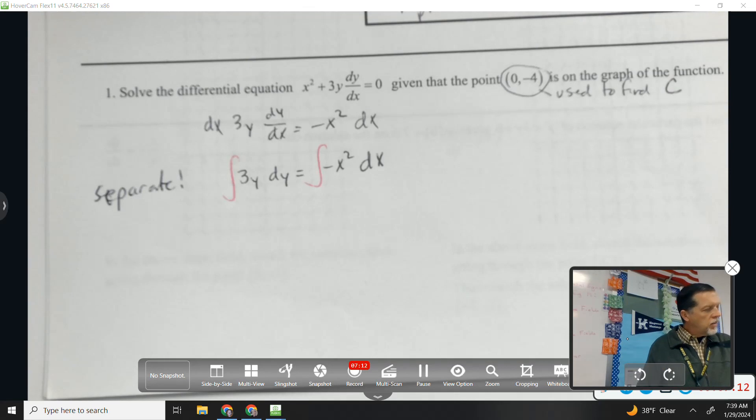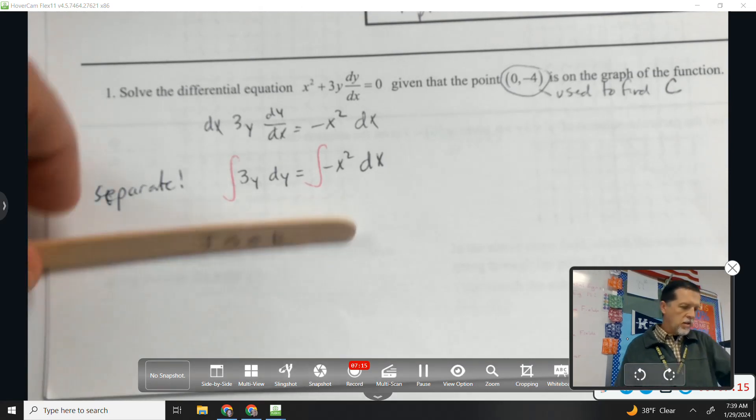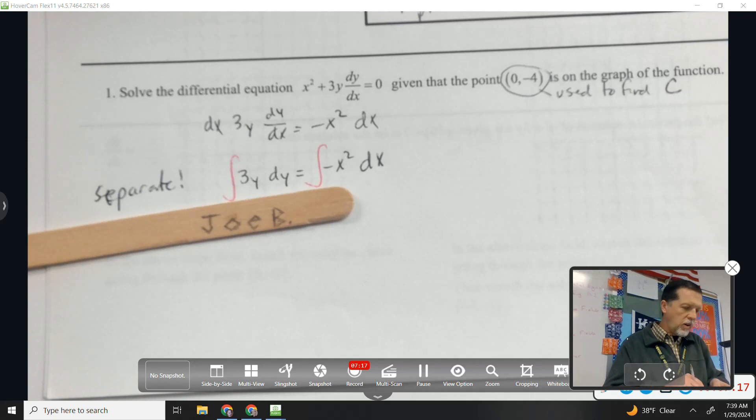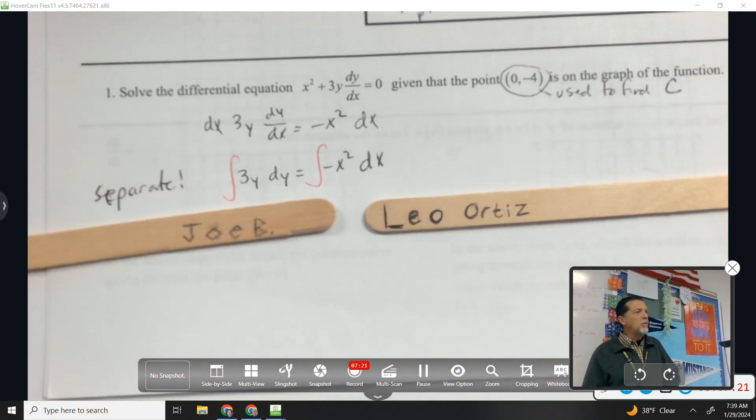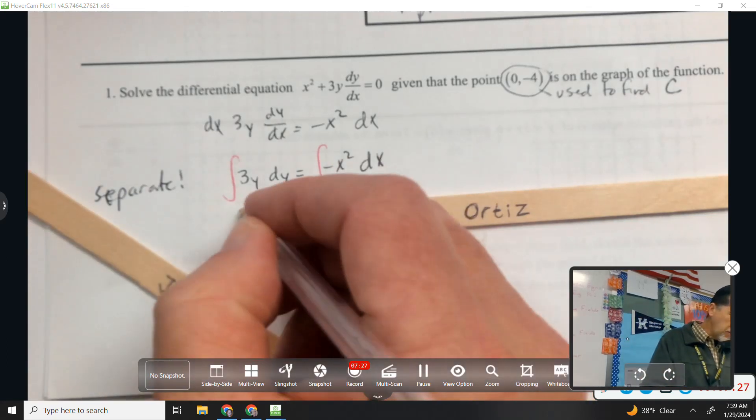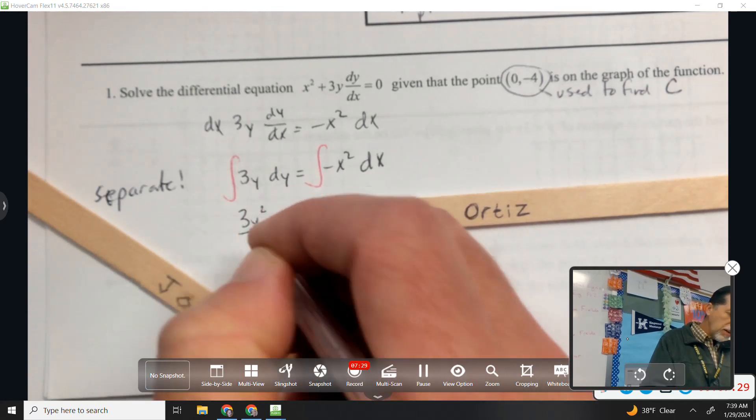Next we'll integrate both sides. So let's pick on some people here. Joe, how about the anti-derivative of 3y dy? 3y squared over 2. Increase the power by 1, divide by the new power. 3y squared over 2.